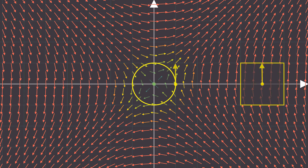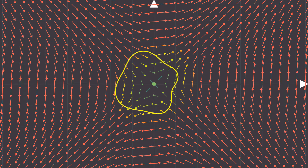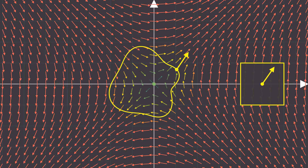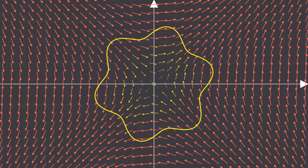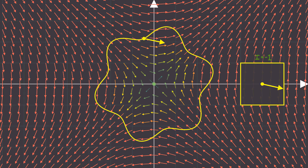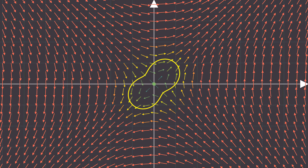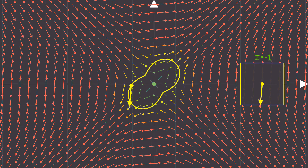Now let's consider a vector field corresponding to a saddle fixed point. Notice that for the first time we get a clockwise rotation — that means its index is equal to minus one. Rather than a circle, let's consider a more interesting simple closed curve. Notice that with this shape the index is still minus one, and even with different shapes the index remains minus one. So what's going on here? Why are all the indices integers, and why do they all seem to be independent of the shape of the curve we choose?